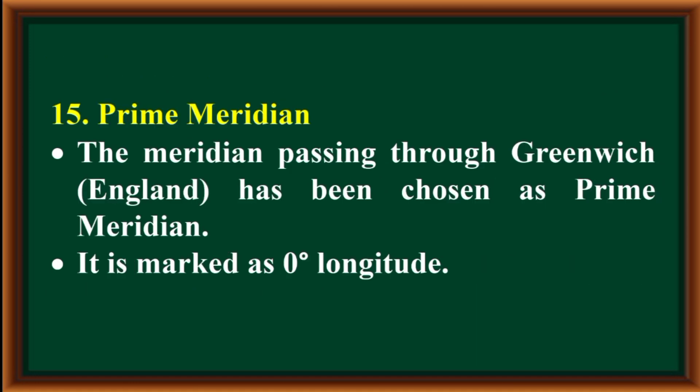Prime Meridian: the meridian passing through Greenwich, England has been chosen as the Prime Meridian. It is marked as zero degree longitude.